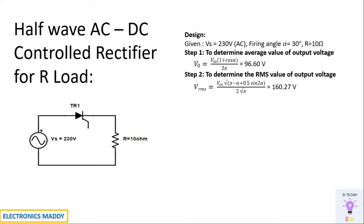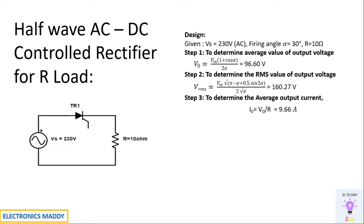The next step is to determine the RMS value of output voltage, given by this formula. One of the commonly made mistakes with this formula is that you have to ensure that the calculator is kept in radians mode, or you can suitably convert it into radians mode while applying this formula. So you will be getting 160.27V.